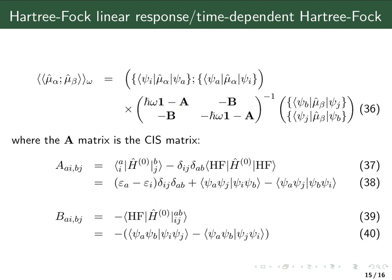There are two matrices, A and B. The A matrix is very closely related to the CI singles matrix — it is the matrix element of the Hamiltonian between singly excited determinants in the bra and ket, which is the singles-singles part of the Hamiltonian matrix. The only difference from the CI singles matrix is that we subtract the Hartree-Fock energy from the diagonal. Evaluating these matrix elements gives an orbital energy difference on the diagonal plus some two-electron integrals.